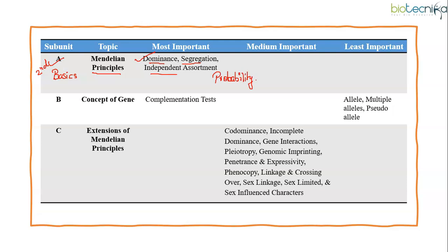This subunit covers most important topics from where questions are frequently asked. Especially, Mendelian mono and dihybrid cross, phenotypic and genotypic ratios in combinations with probability based questions are important from this subunit. Both statement based and numerical based questions are expected from this particular subunit.